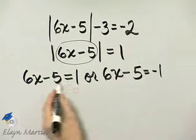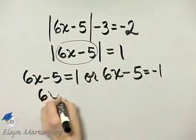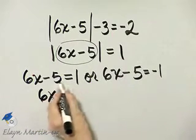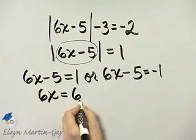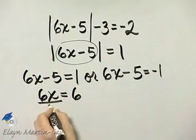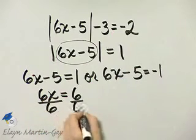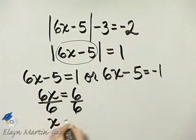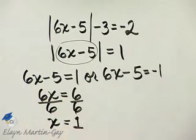If I add 5 to both sides here, I'll have 6x is equal to 1 plus 5, or 6, then divide both sides by the coefficient of x, and you'll have 1 as one solution. I'll let you check it.